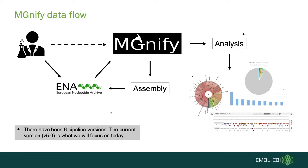The European Nucleotide Archive has its own set of metadata, which we inherit — so it's quite important that archiving is done first. After it's been archived in ENA, we pick it up and perform analysis of the raw reads, or if you want to request an assembly we can do that too. What you end up with is a set of figures, some of which are interactive, and also a set of download files.